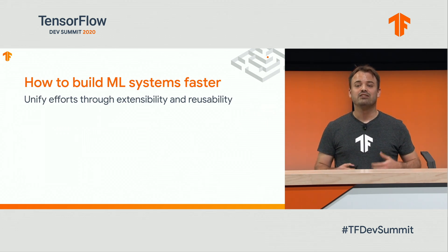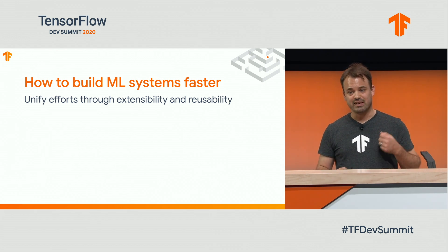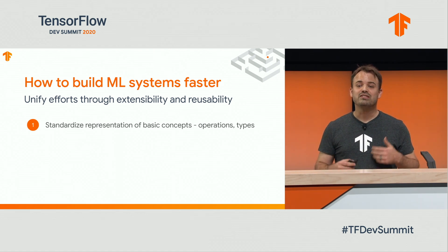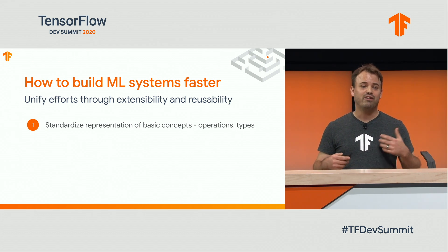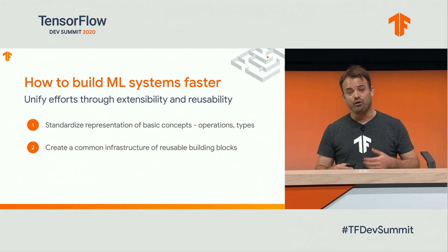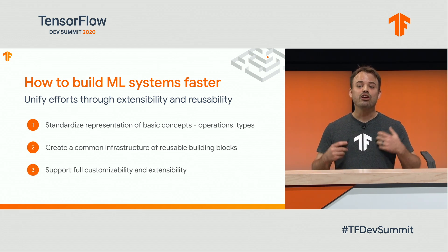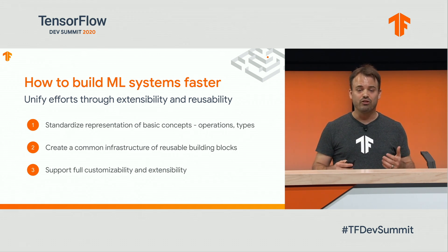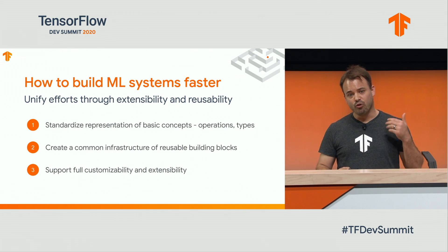So we need to build these ML systems faster. We want to unify efforts for extensibility and reusability while allowing customization as needed. We want to standardize representation of basic concepts such as operations and types — what defines an operation, how you define an operation or a type. We want to create a common framework of reusable passes that you can combine to create your own solutions, and also make it fully customizable and extensible. The deployment scenarios and models of five years ago differ greatly from what we have today, so we want a system that's able to scale and adapt for all future needs.